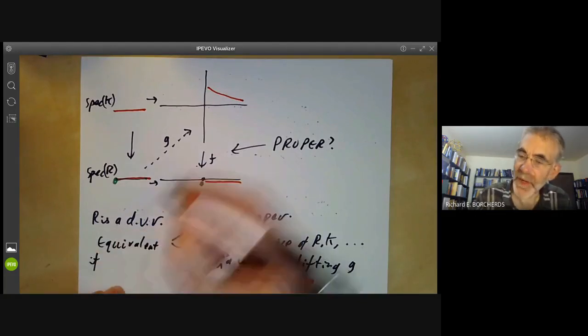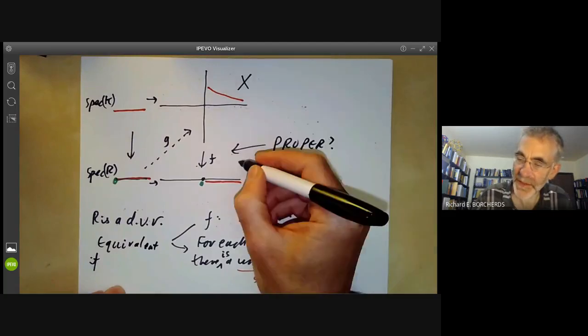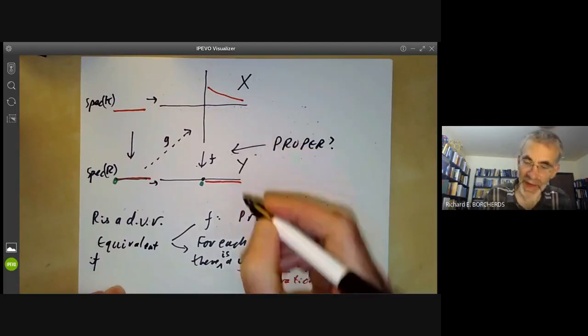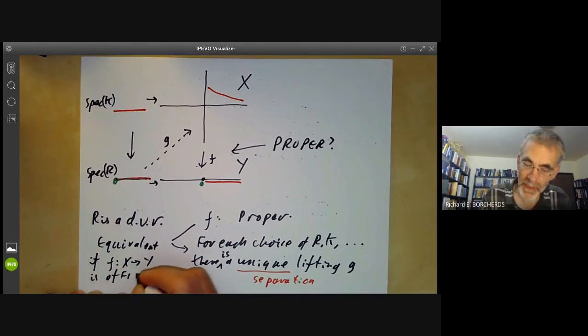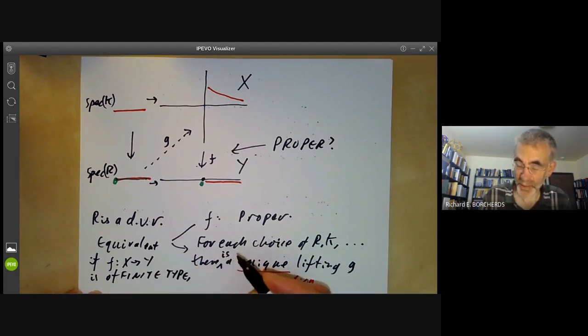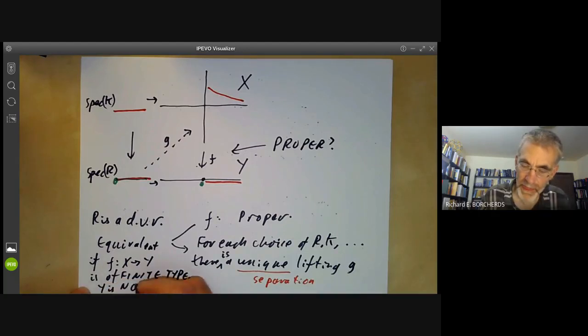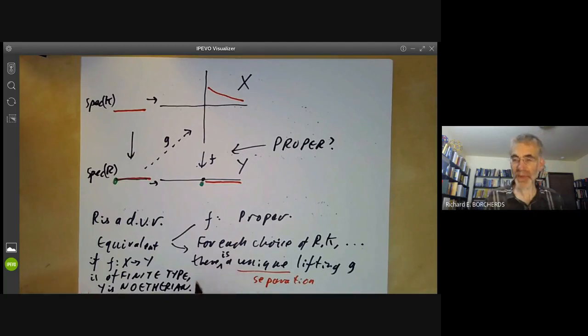So what Grothendieck proved is that these two are equivalent if, let me label these, let's call this map X and this map Y, if the map F from X to Y is of finite type and Y is Noetherian.